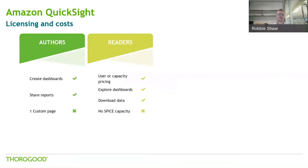What's probably more interesting in the pricing model is the readers. These are people who are just going to consume the end dashboard that the author has created - they can explore dashboards and download the data, but they can't develop dashboards. There are two different types of pricing for readers. You've got user pricing, where you pay a really minimal amount per session - each time you're opening QuickSight and looking at the dashboard - and that amount ranks up until it hits a cap, which is the maximum you can be charged for the rest of that month. Or there's capacity pricing, where you buy your sessions in bulk and distribute them among a number of users. It's pretty flexible based on how many readers you have and how often they'd be reading the data.